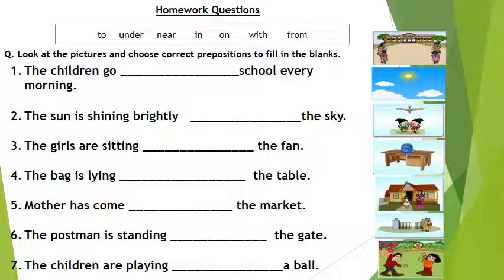Number 1 The children go dash school every morning. Number 2 The sun is shining brightly dash the sky. Number 3 The girls are sitting dash the fan. Number 4 The bag is lying dash the table. Number 5 Mother has come dash the market.